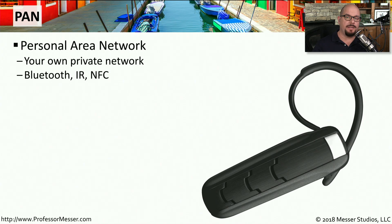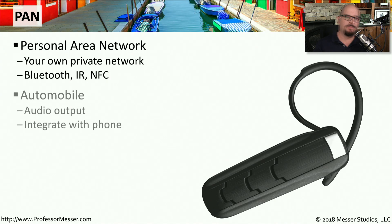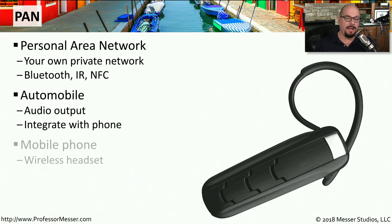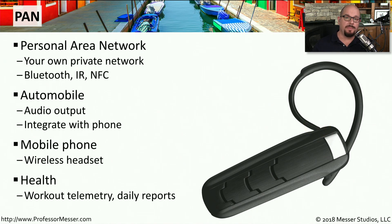If you're using a network that is in your immediate area, then it's probably a PAN, or a personal area network. If you're using Bluetooth or infrared connectivity, or you're paying for something with your mobile phone using a near-field communication or NFC connection, you can consider all of those personal area networks. For example, if you get into your car and connect your phone over a Bluetooth connection, that is certainly a very popular personal area network. We often have wireless headsets that we put in our ear — that's also using Bluetooth, so that would be considered a personal area network. And if you're working out on a treadmill or an elliptical and sending that telemetry back to your mobile device, that's also using a personal area network.